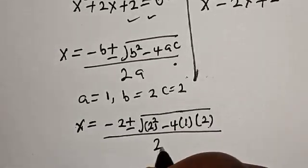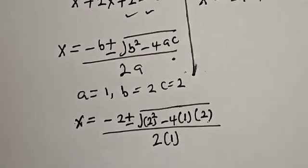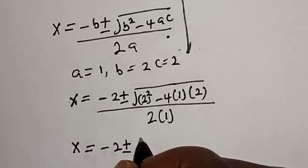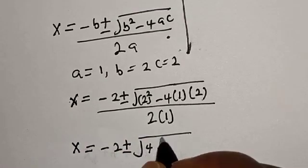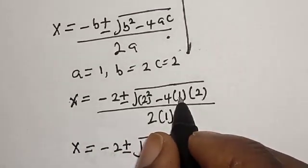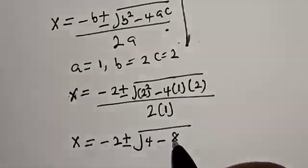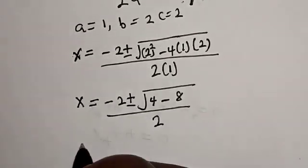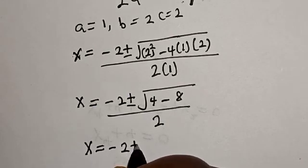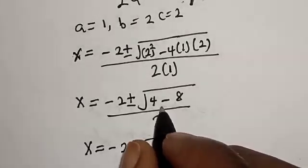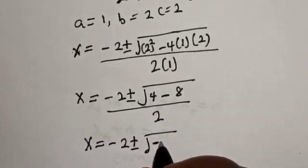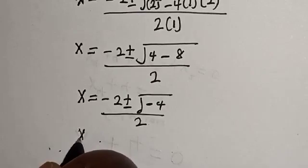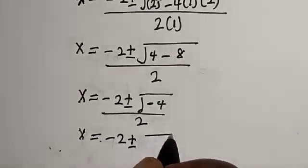Divided by 2 multiplied by a, which is 1. Then this is s is equal to minus 2 plus or minus square root of 2², that is 4, then minus 4 times 2, that is 8, divided by 2. Then this is s is equal to minus 2 plus or minus square root of 4 minus 8.